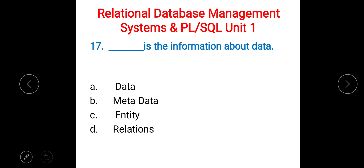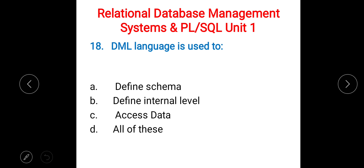Next: dash is the information about data. Options: A) data, B) metadata, C) entity, D) relations. The right answer is B) metadata — that is, data about data. Next: DML language is used to — A) define schema, B) define internal level, C) access data, D) all of these. The right answer is C) access data.